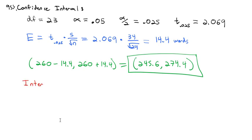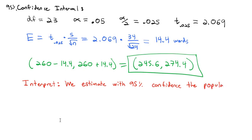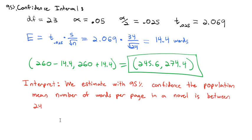We can estimate with 95% confidence that the population mean number of words per page in a novel is between 245.6 words and 274.4 words. And now we have our confidence interval.